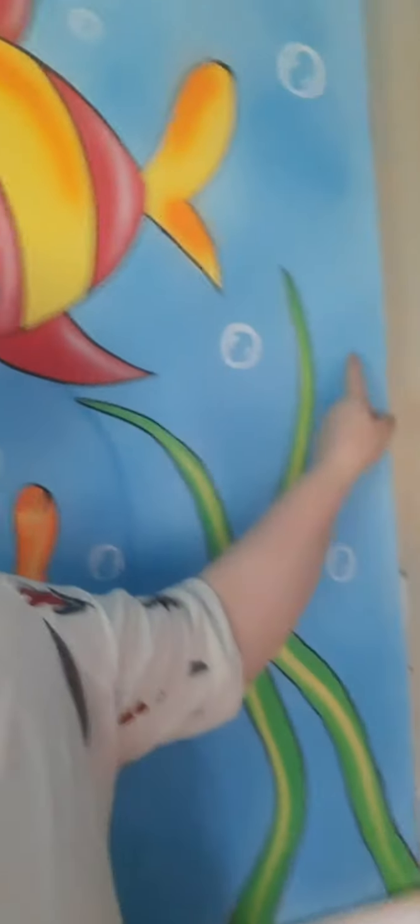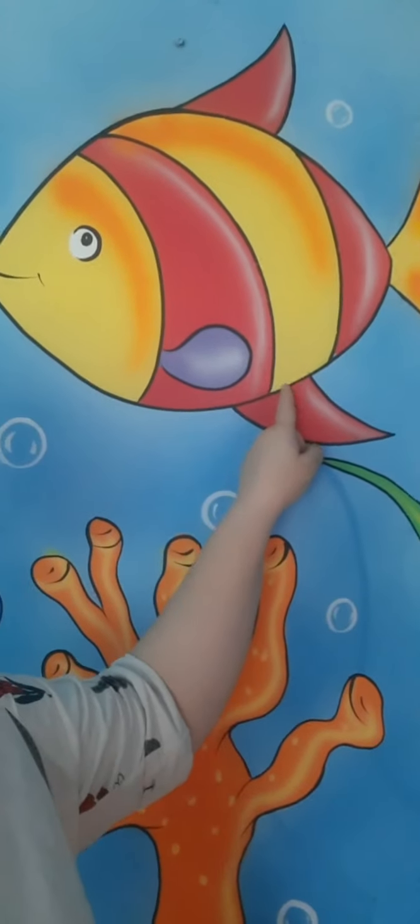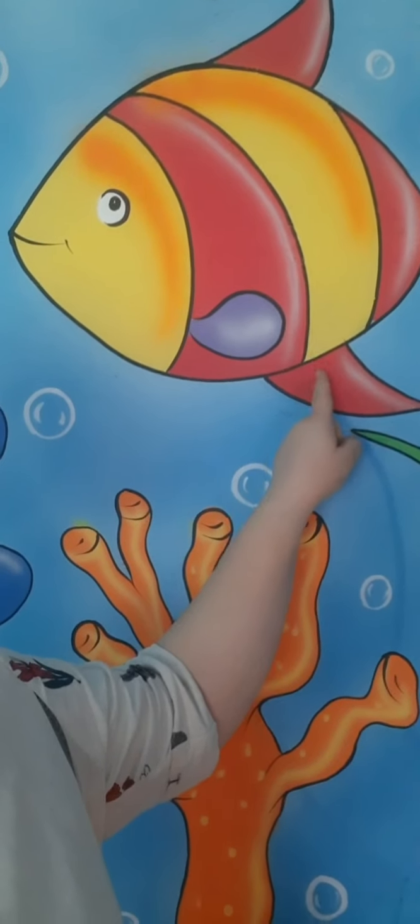So today we are going to write F letter in our English workbook. So dear children, what do you see behind? What is this children? This is F for Fish. This is F for Fish.